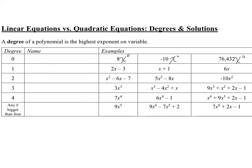Numbers that stand alone without variables have a degree of 0 and are called constants. Expressions with a degree of 1 — where the exponent on x is 1 — are called linear expressions. When you have equations like y equals 2x minus 3, y equals x plus 1, or y equals 6x, those create lines — hence the word 'linear,' which has the word 'line' in it.